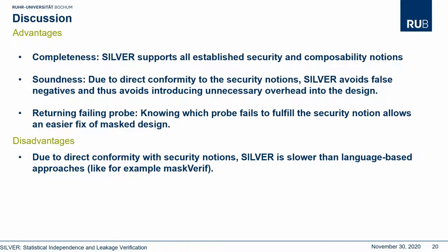Now let's give a quick wrap-up about the advantages and disadvantages of SILVER. SILVER is complete, meaning it supports all well-established security and composability notions. SILVER is sound, meaning it is in direct conformity with the definition of the security notions and avoids false negatives, which leads to less overhead being introduced by the designer. It also gives useful results — it returns, for example, the first failing probe. Knowing this will enable a much easier fix by the designer. As a disadvantage, we note that our tool is slower than language-based tools like MaskVerif.